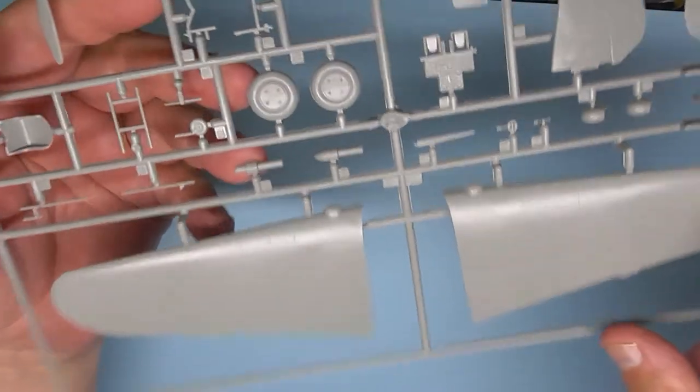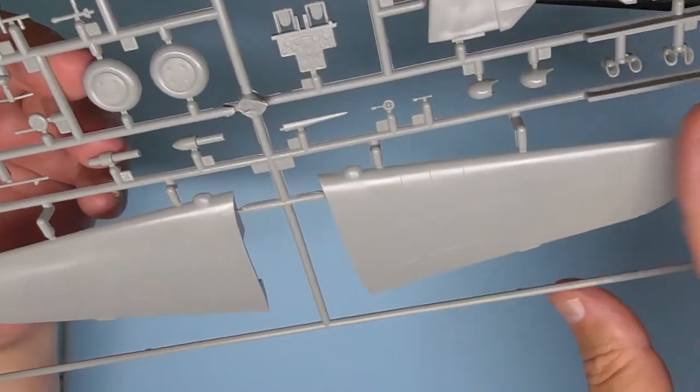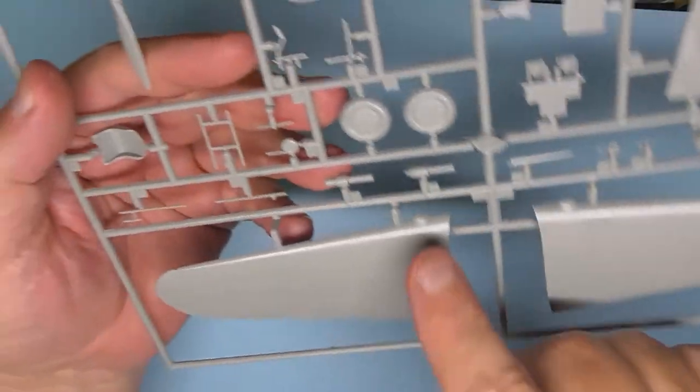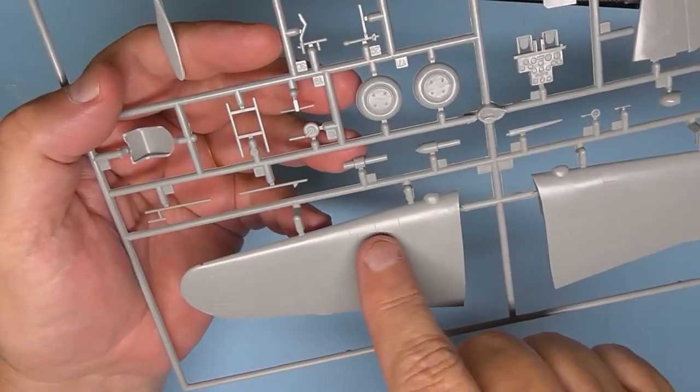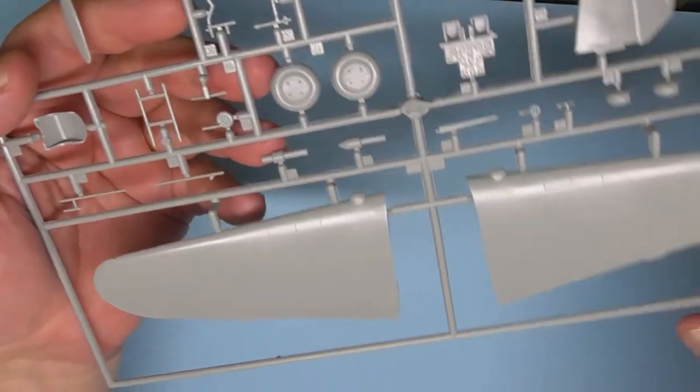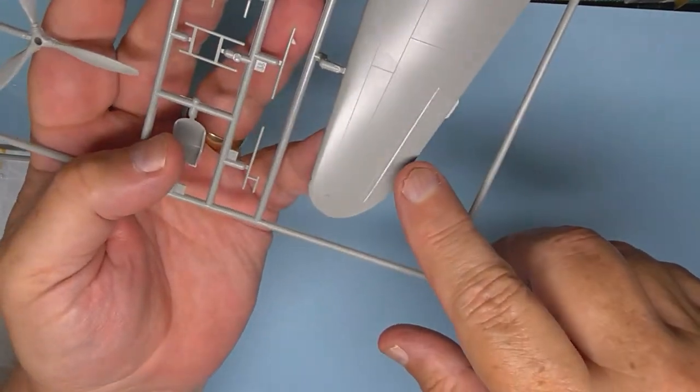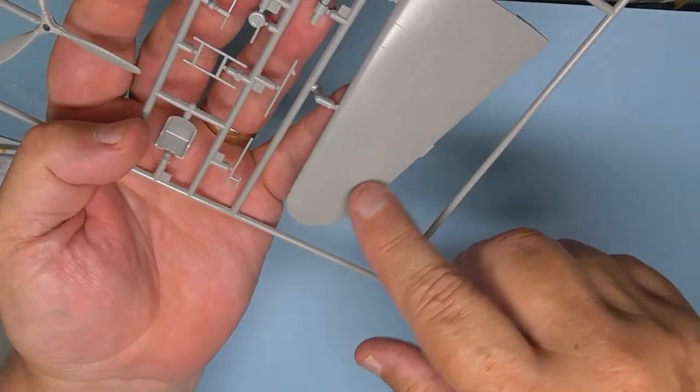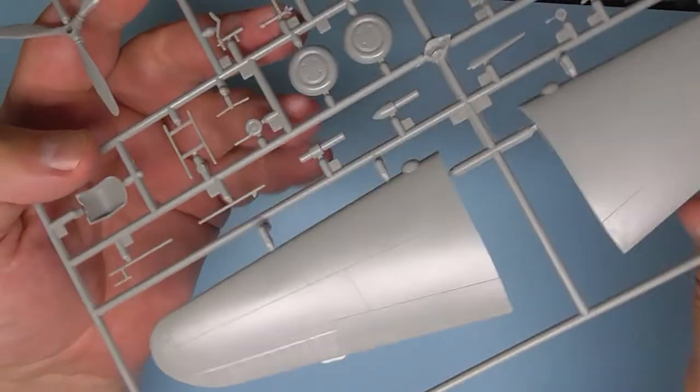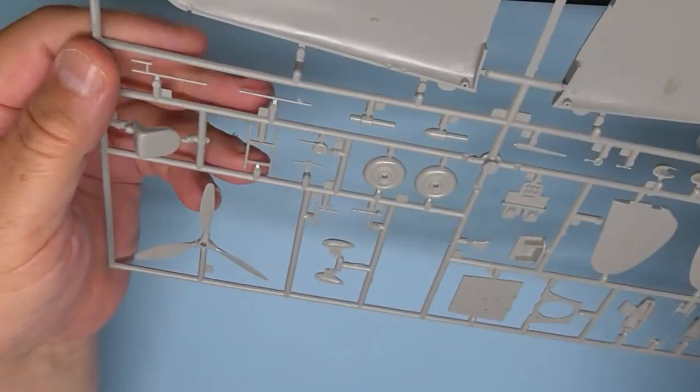And the wings, as on the fuselage, got very nice fine panel lines. No riveting on here though. And you can see that the ribbing on the ailerons is very fine, subtle.